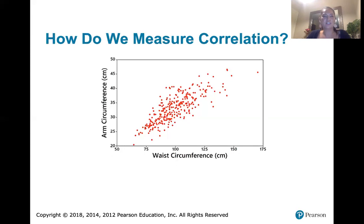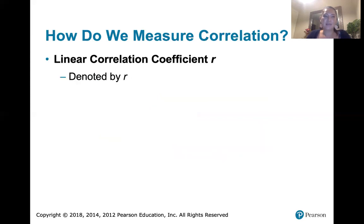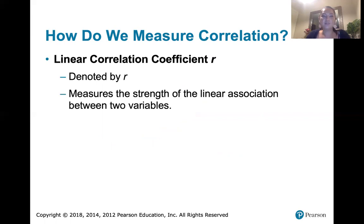We can measure this correlation with what's called the linear correlation coefficient R. We have a linear correlation here — this distinct line pattern of waist circumference increasing as arm circumference increases. We'd like to be able to measure the strength of that correlation, and we can do so with R. This measures the strength of the relationship between the two variables.